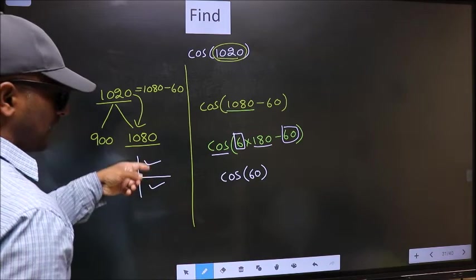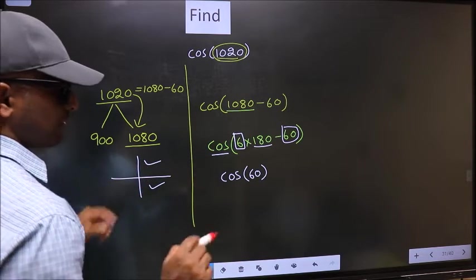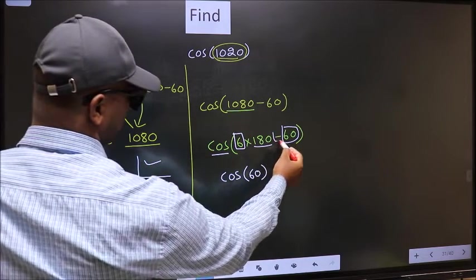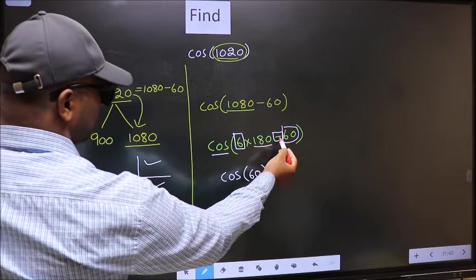So now to select the quadrant, we should look at this symbol. Here we have negative.